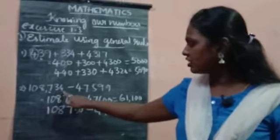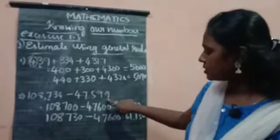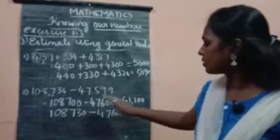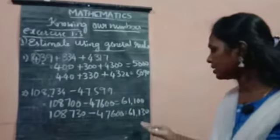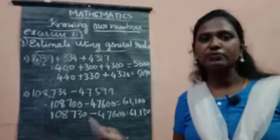And again, in the 10th place, 34 is there, you just consider 30. Again, here, 10th place it is more. I have written 600. If you minus from this number to this, you will get 61,130. I hope you understood with this.